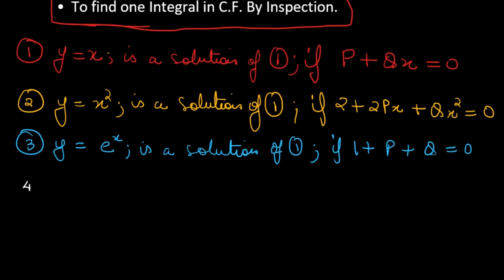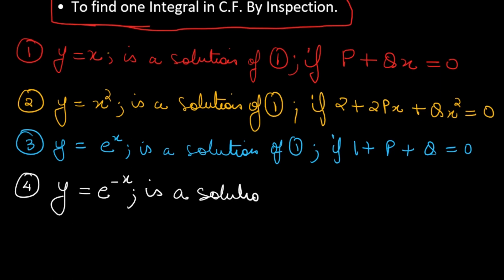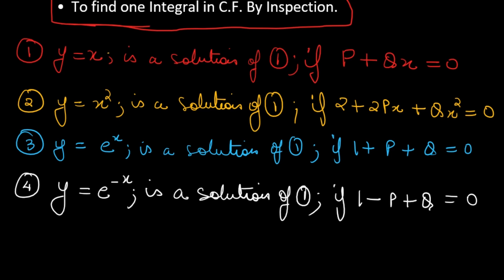Point four: y = e⁻ˣ is a solution of equation one if 1 - P + Q = 0.